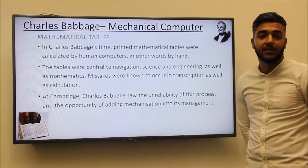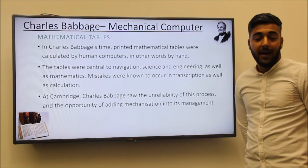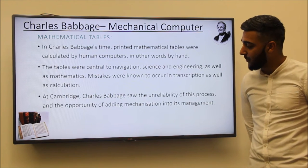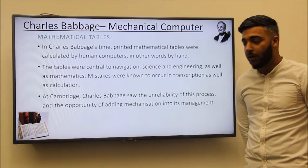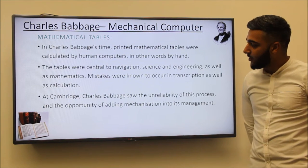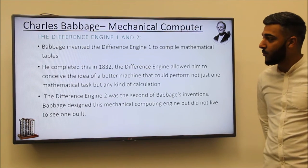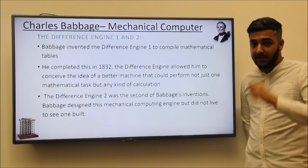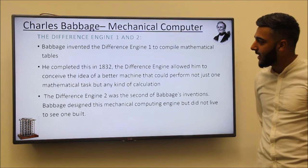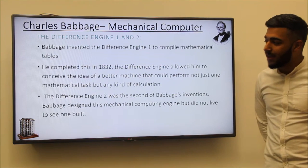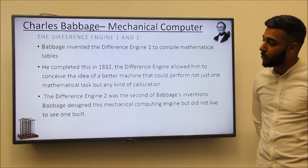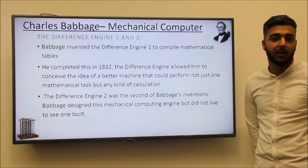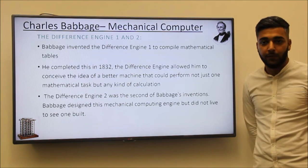The tables were central to navigation, science, engineering and mathematics. At Cambridge, Charles saw the downside of this process and decided that now would be the best time to implement mechanisation into its management to stop all the problems and miscalculations happening. Charles invented the Difference Engine 1 to stop the miscalculations and also improve mathematical solutions. He designed the Difference Engine 1 to help with mathematical tables and completed it in 1832.